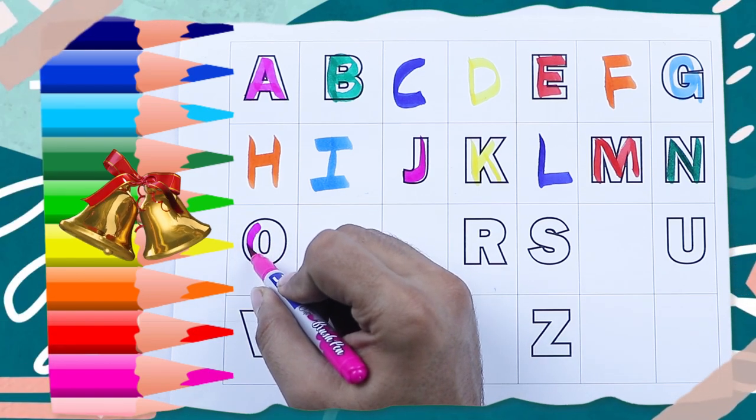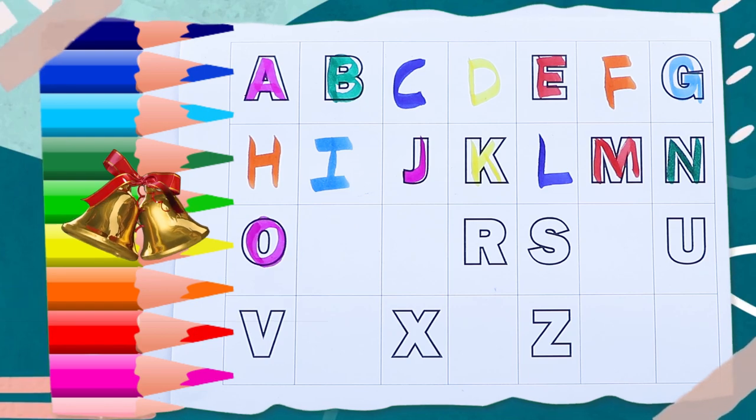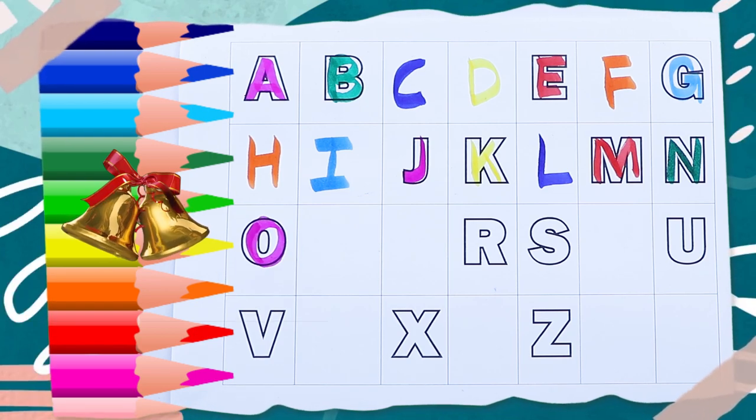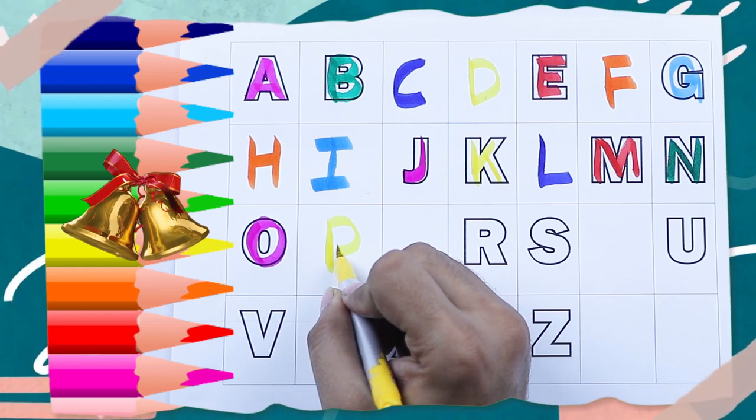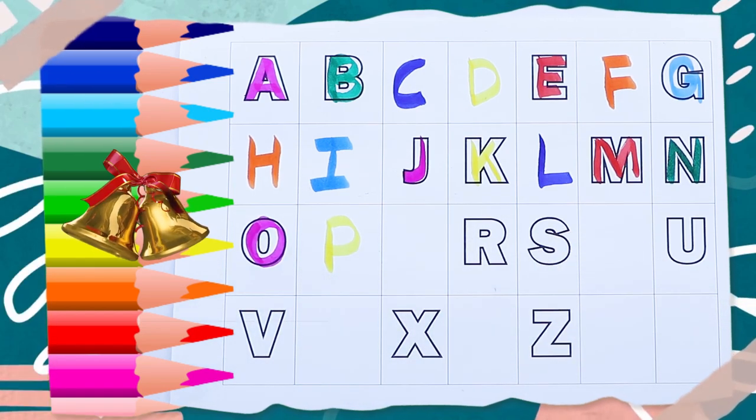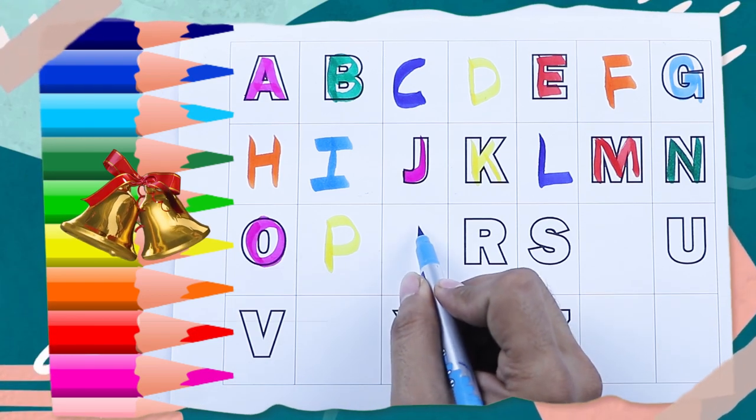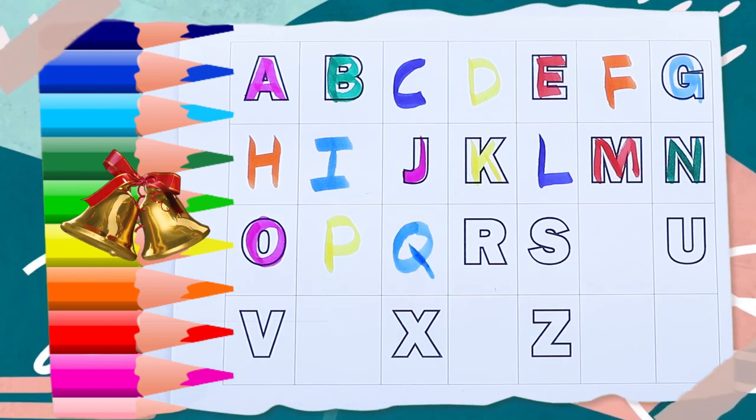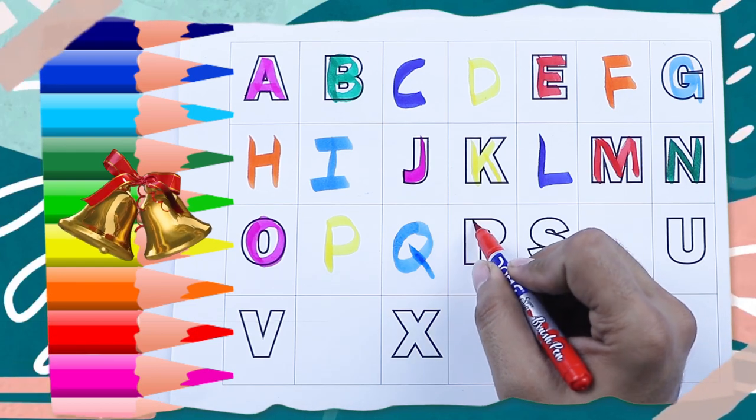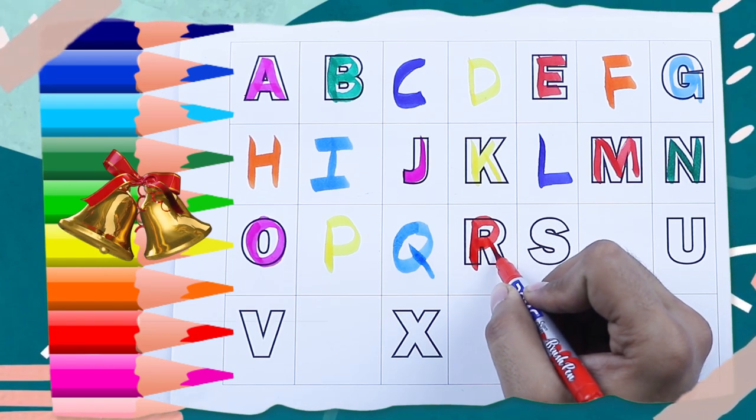Pink color, O, O, O for octopus. What next? P, P for parrot. What is the next? Capital Q, Q for queen. A, red color, R, red color, R, R for rabbit.